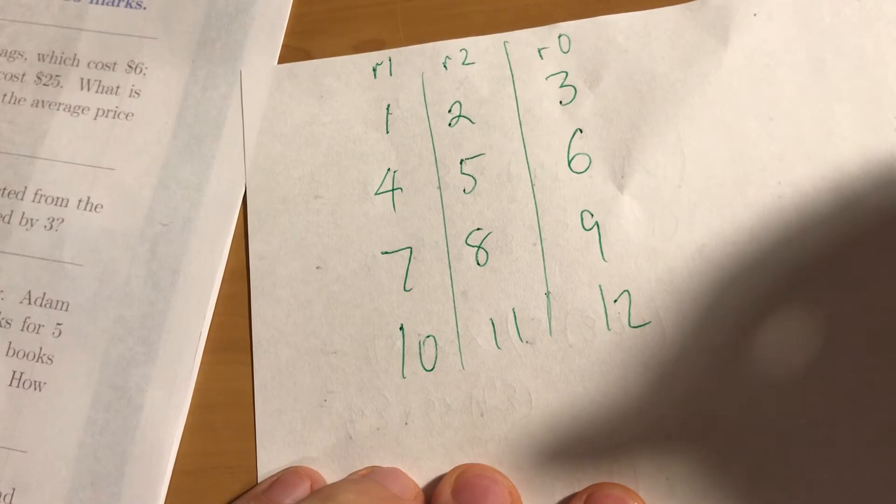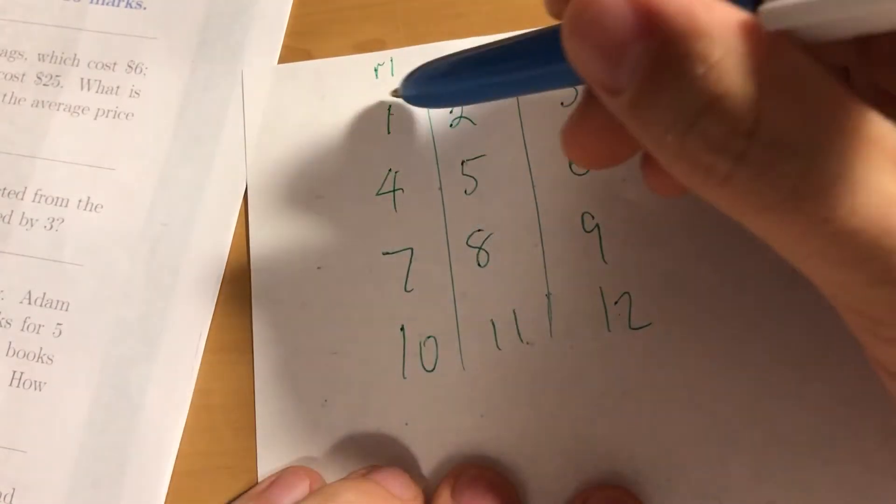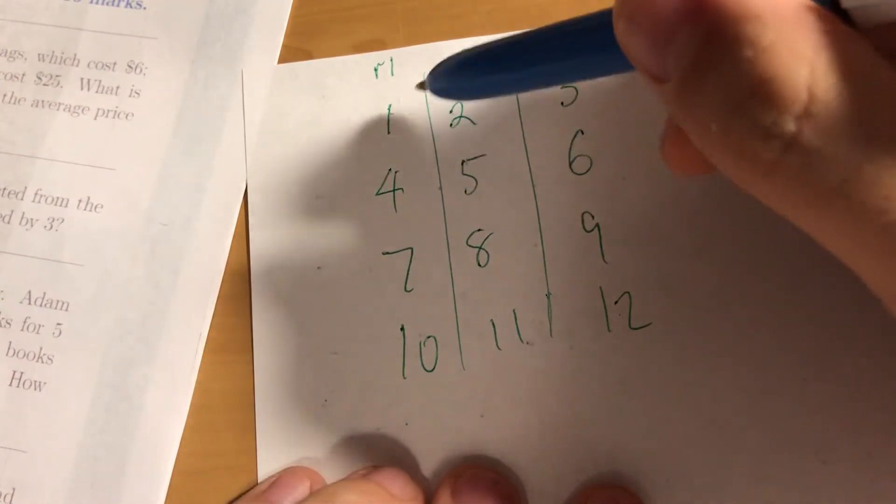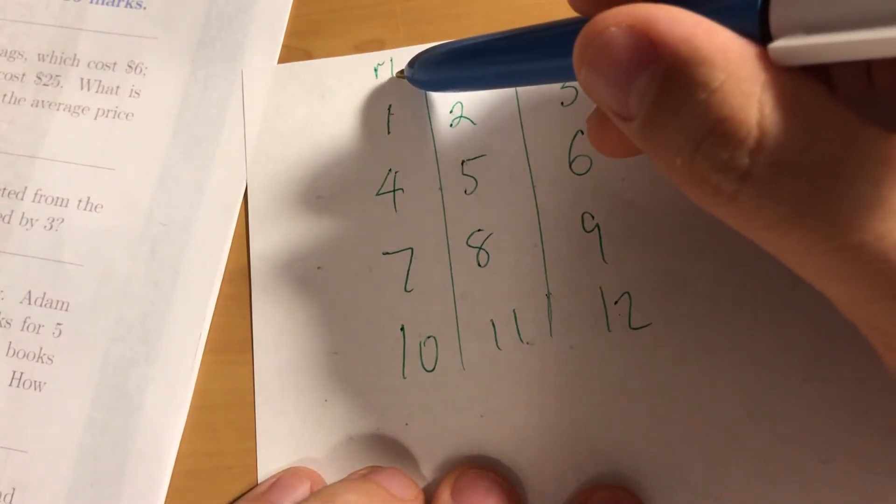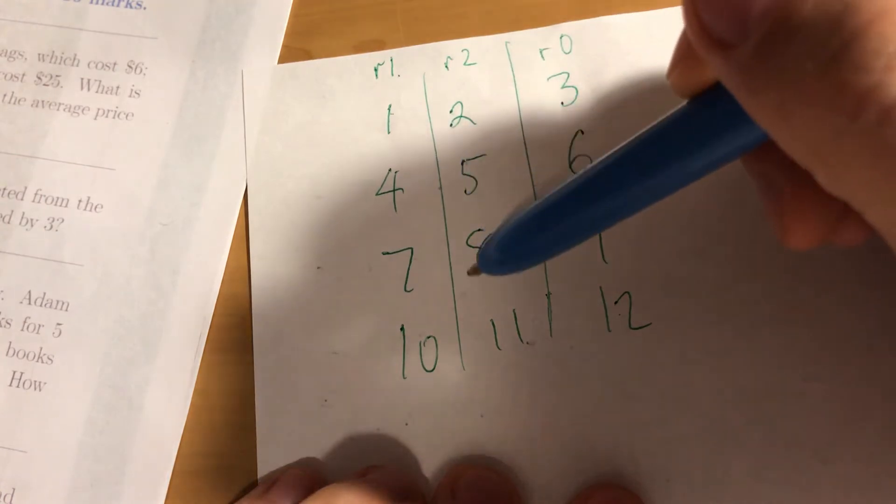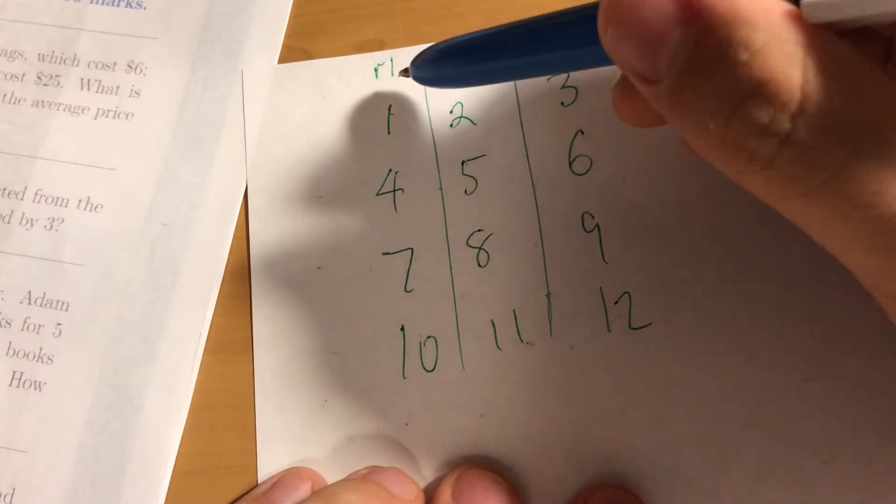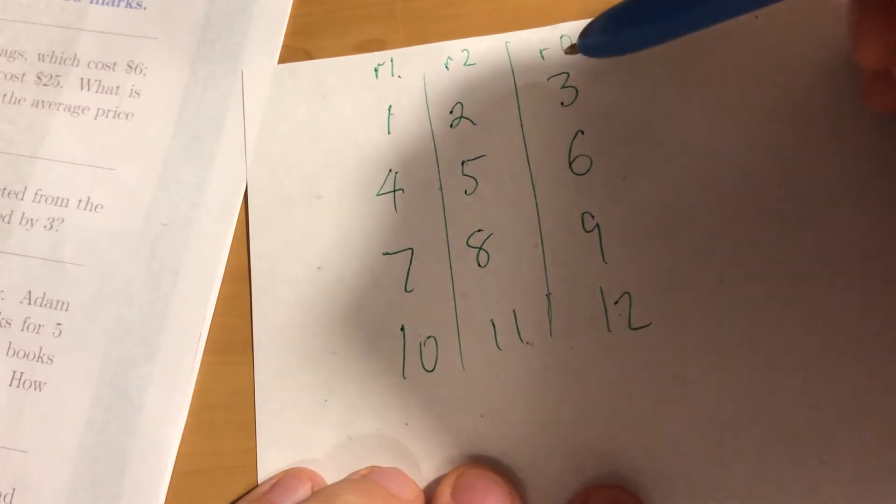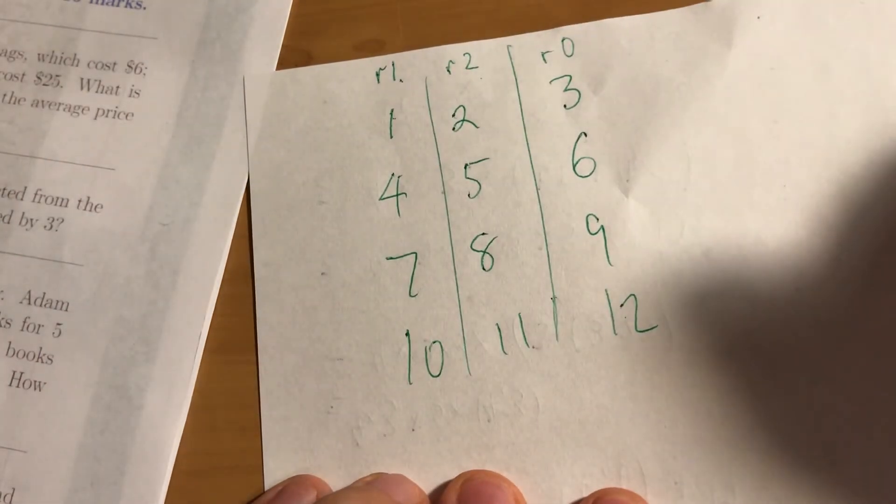You could pick three things from just one of the columns because then the remainders will just be times by 3. So you get remainder 3, remainder 6, and still remainder 0. Okay, so that'll work.